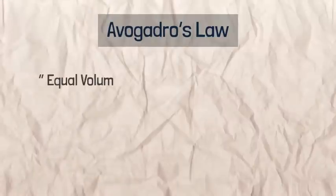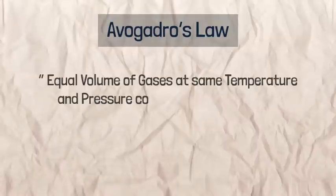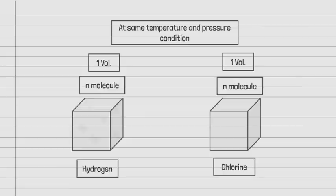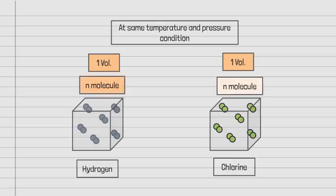Avogadro's Law: Equal volumes of gases at the same temperature and pressure contain equal numbers of molecules. Consider one volume of hydrogen and one volume of chlorine under the same conditions of temperature and pressure. According to Avogadro's law, both will have the same number of molecules — if system 1 has n molecules, then system 2 must also have n molecules.